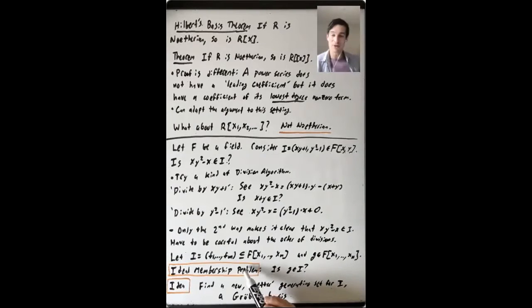And then you just have another polynomial in this polynomial ring in n variables. And the ideal membership problem asks, is G in this ideal I? How do you compute that? How do you figure out if it's in the ideal or not in the ideal?